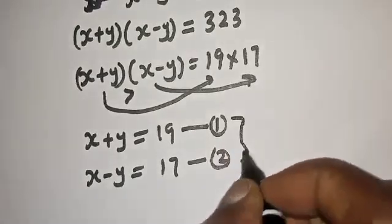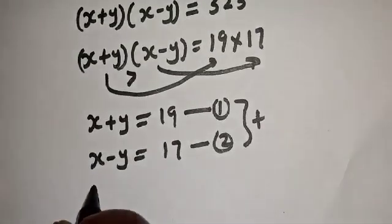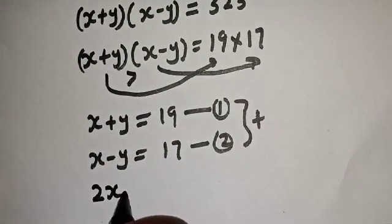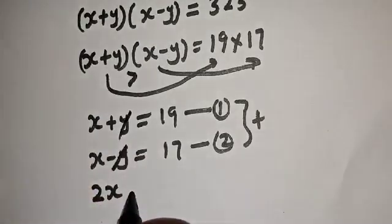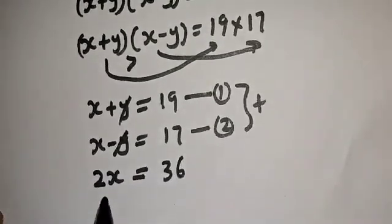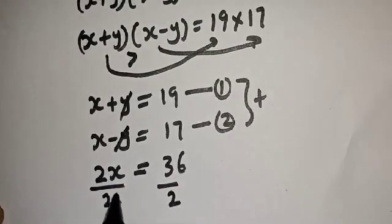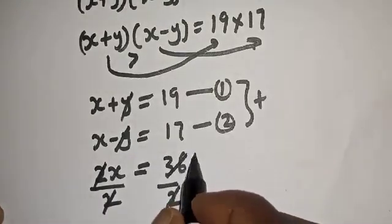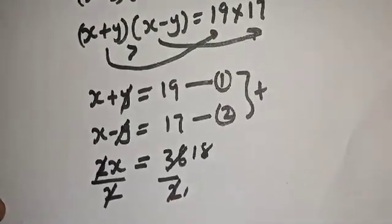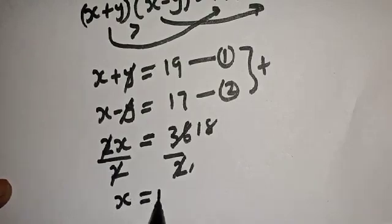Let's add equation 1 and equation 2 together. We get 2s — the y terms cancel — equal to 19 plus 17, which is 36. Now let's divide both sides by 2. So s is equal to 18.